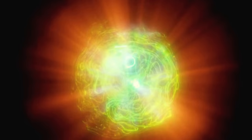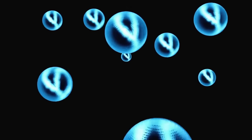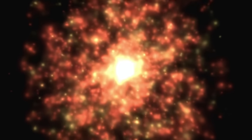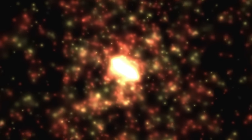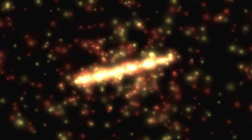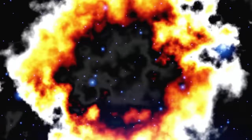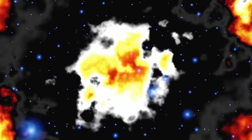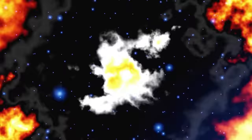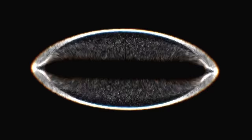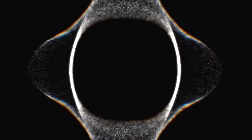Yet the reality is starkly different. The universe is overwhelmingly composed of matter, with virtually no antimatter to be found. This absence contradicts the expected cosmic balance and points to an anomaly in the early universe where, for reasons unknown, matter slightly outnumbered antimatter. This slight discrepancy, with about one extra particle of matter for every billion antimatter particles, suggests an imbalance that current physics struggles to explain. Despite matter and antimatter being nearly identical, with their interactions governed by the same fundamental forces, something tipped the scales in favor of matter's survival.